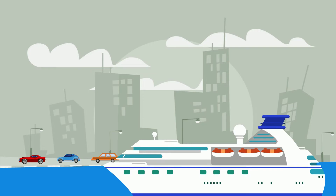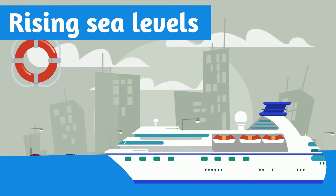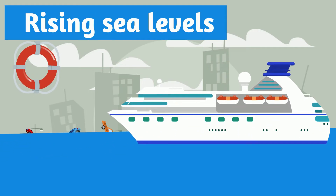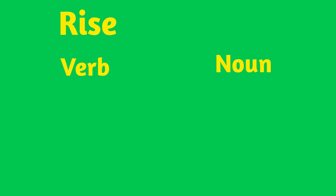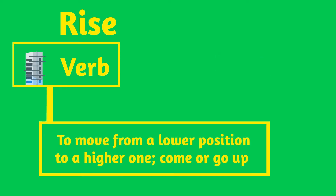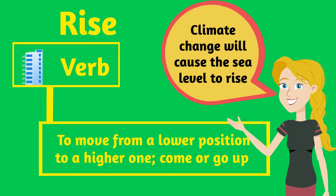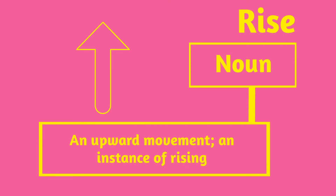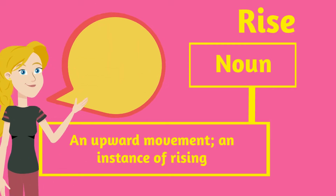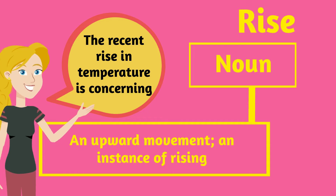Because of this melting ice, the earth is experiencing rising sea levels. The word rise is both a verb and a noun. The verb definition is to move from a lower position to a higher one — to come or go up. For example: climate change will cause the sea level to rise. As a noun, rise means an upward movement, an instance of rising. For example: the recent rise in temperature is concerning.